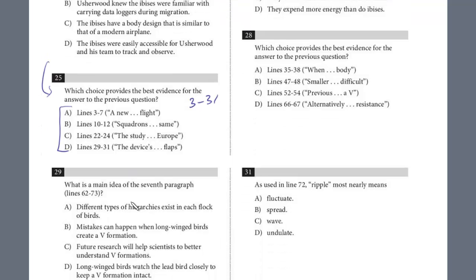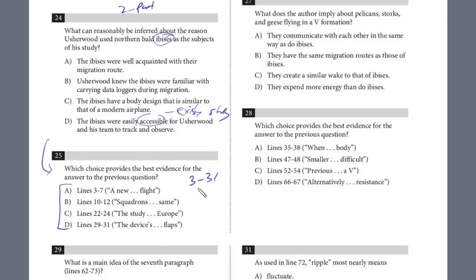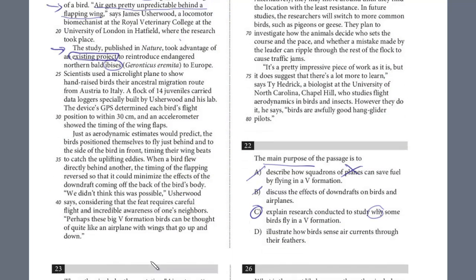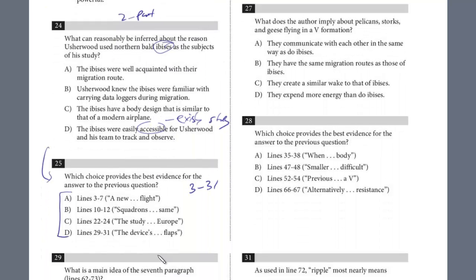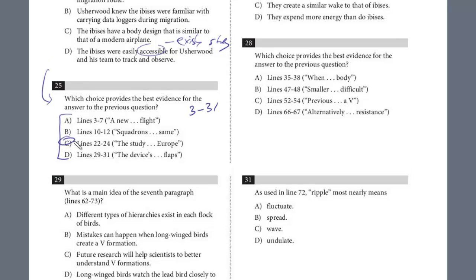This function question is why the ibises were used. If we look at the choices, the ibises were easily accessible for Usherwood and his team to track, right? Easily accessible because we had this existing study. The reference to that, let's just go back and see what lines - I believe it was the 20s. Yes, it's 22 to 24. This is again a two-part question. They perfectly fit together if you do these right. You just have to practice them, but I think they totally fit together.